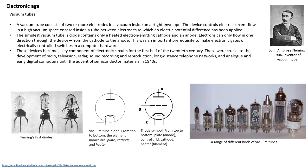The invention of vacuum tubes is considered to be the most important part in the information world, as it allowed the incorporation of the electronic system. A vacuum tube consists of two or more electrodes in a vacuum inside an airtight envelope. The device controls electric current flow in a high vacuum space encased inside the tube between electrodes to which the electric potential difference has been applied. The simplest vacuum tube is a diode containing only a heated electron-emitting cathode and an anode. Electrons can only flow in one direction through the device, from the cathode to the anode.